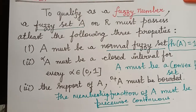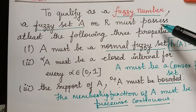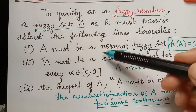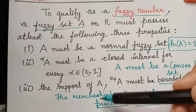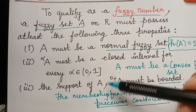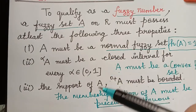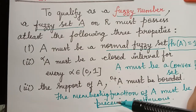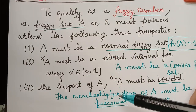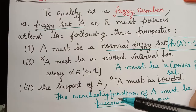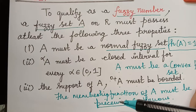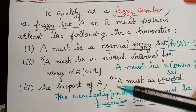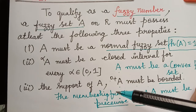For a fuzzy set to be a fuzzy number, it has to satisfy these three conditions. Now let us understand this better with the help of an example.